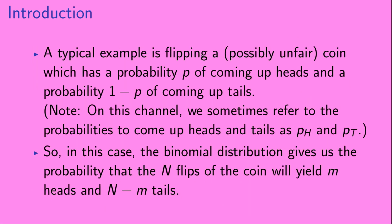A typical example is flipping a possibly unfair coin, which has a probability p of coming up heads and a probability 1 minus p of coming up tails. And we should note that on this channel, we sometimes refer to the probabilities to come up heads and tails as p-h and p-t. In this case, the binomial distribution gives us the probability that the n flips of the coin will yield m heads and n minus m tails.